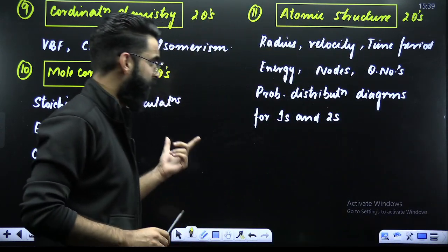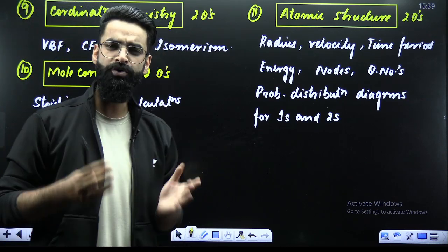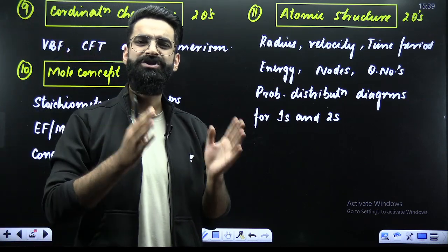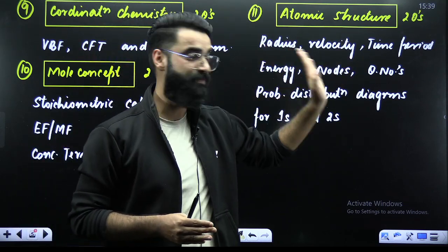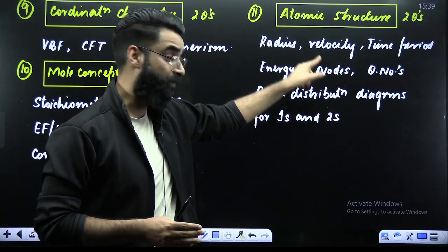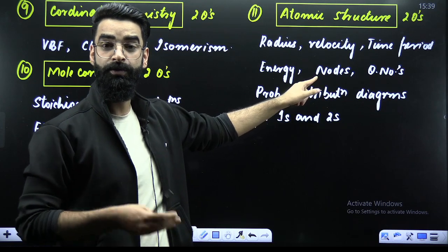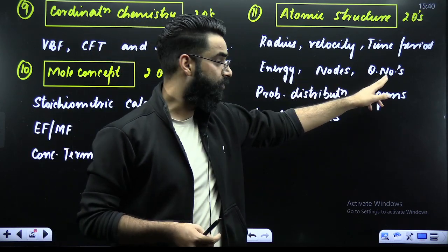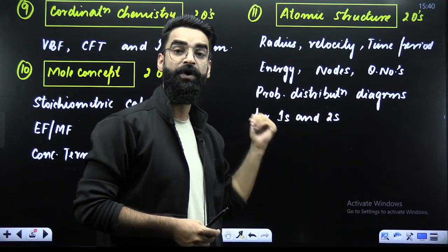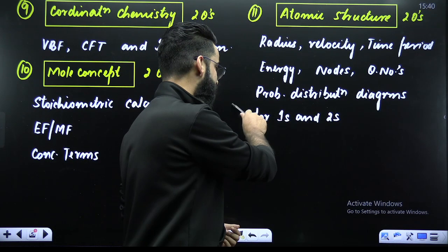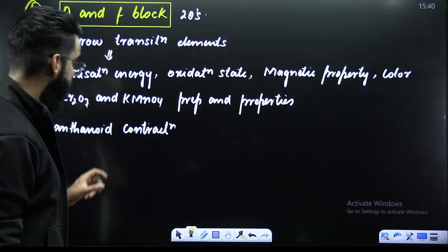Atomic structure is very predictable. You'll most often get questions based on Bohr's model — involving radius, velocity, time period, frequency, energy — calculation of nodes, which involves radial nodes and angular nodes, quantum numbers, and the probability distribution diagram for 1s and 2s. Have an eye on that particular topic as well.